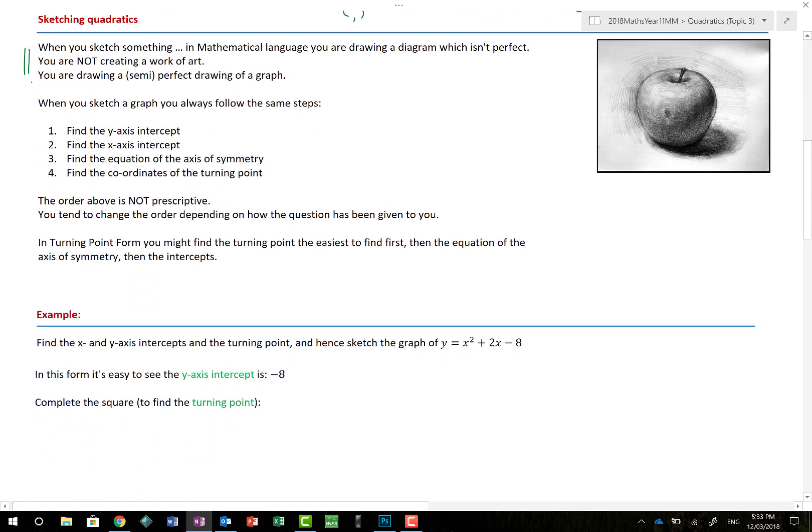So, when you sketch something, in mathematical language, you do a diagram which isn't necessarily perfect. The difference between the sketch, or if you're not doing a sketch, the chances are you're plotting something. So, if you have the equation X squared, for example, then you would be literally sitting there plotting all the points and then trying to do some beautiful hand sketch. That is a plot.